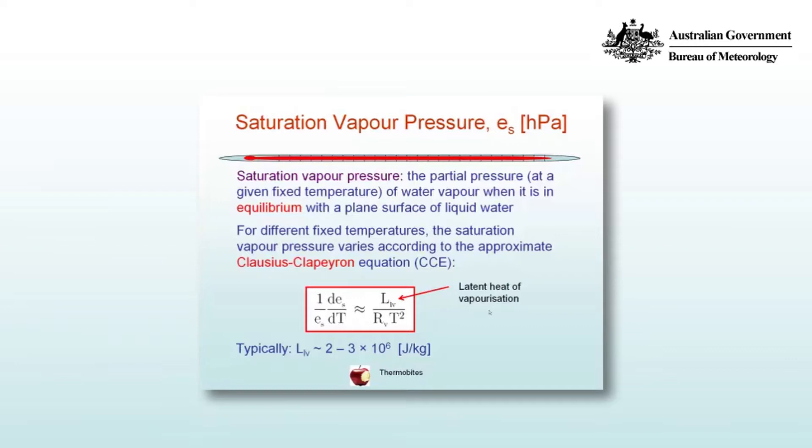Remember, latent heat is the amount of energy required to change the phase, in this case from liquid to vapour, and that occurs at a constant temperature. Typically, L_LV is 2 to 3 times 10 to the 6 joules per kilogram.